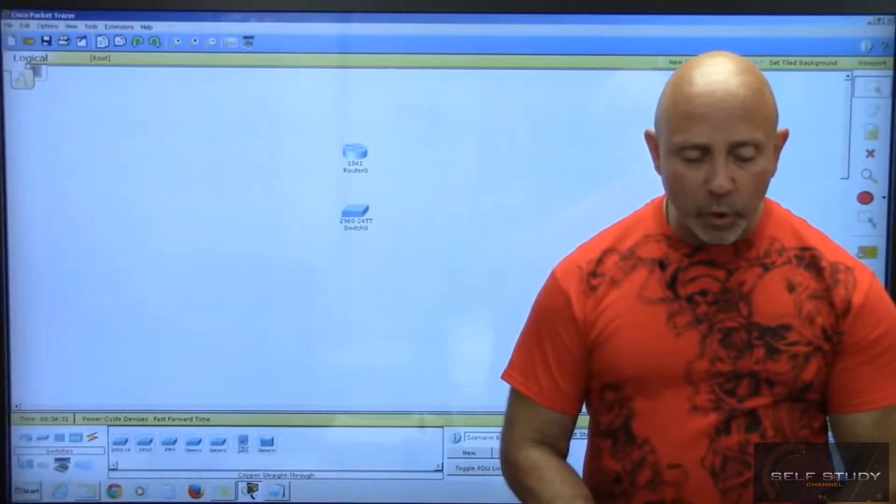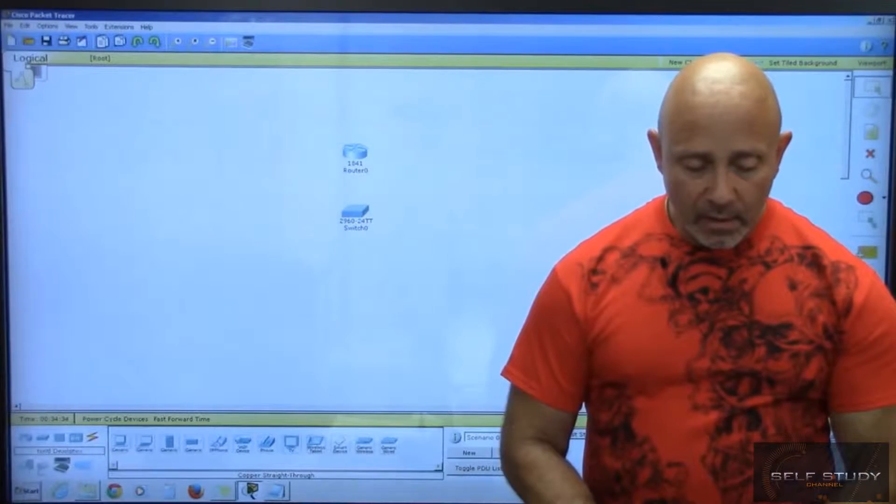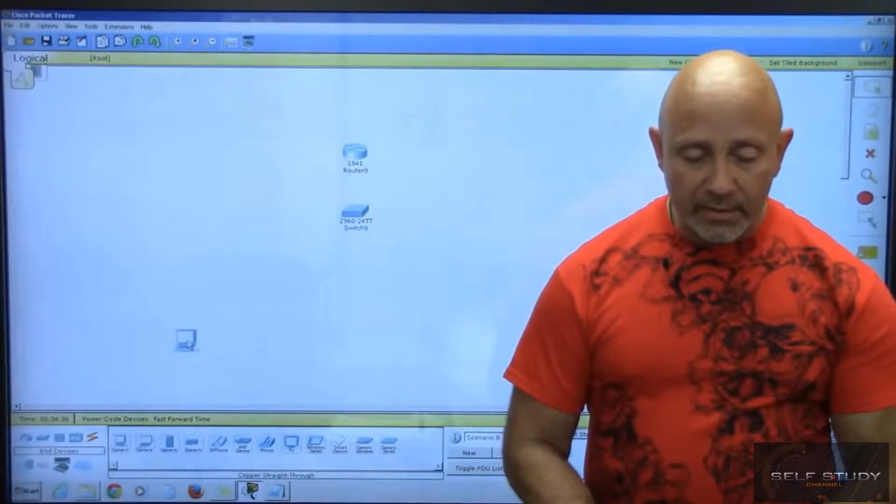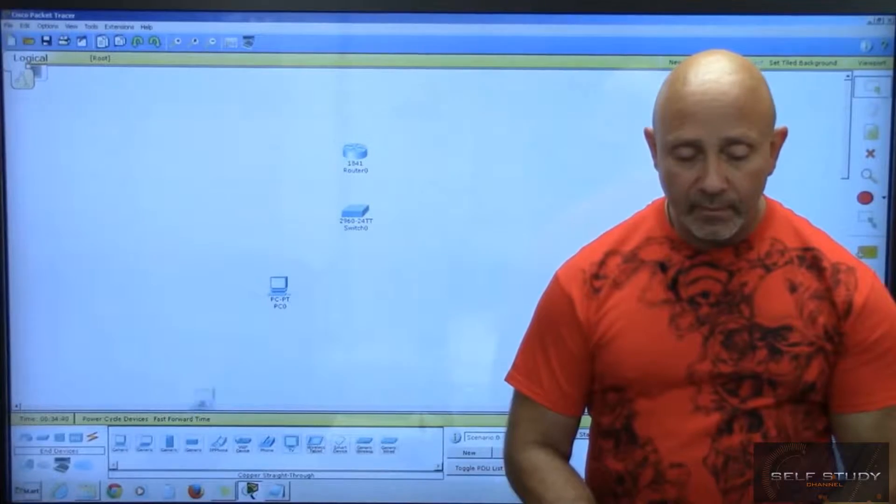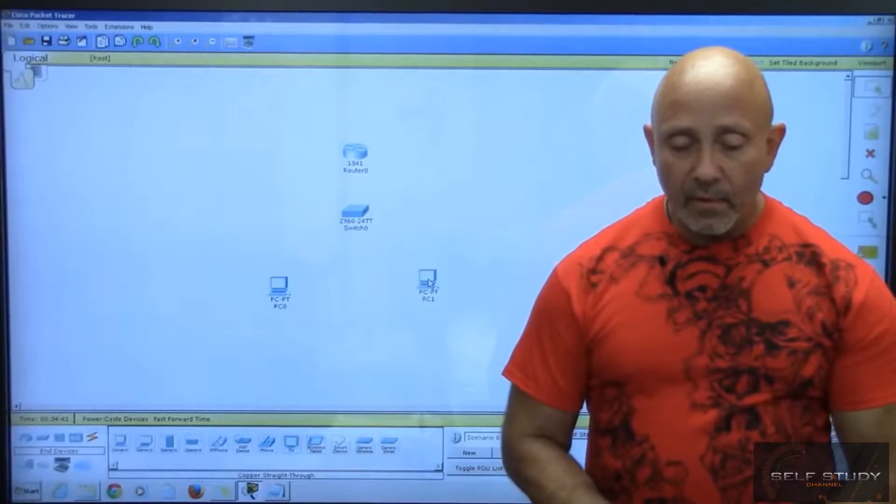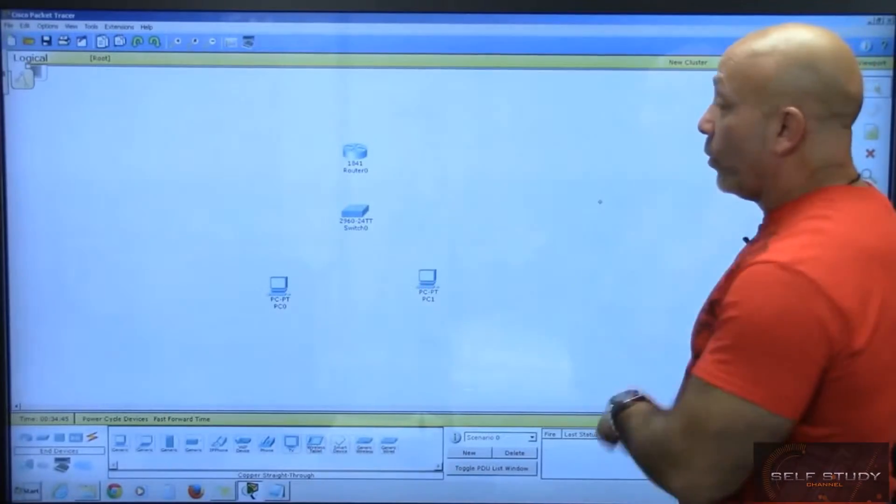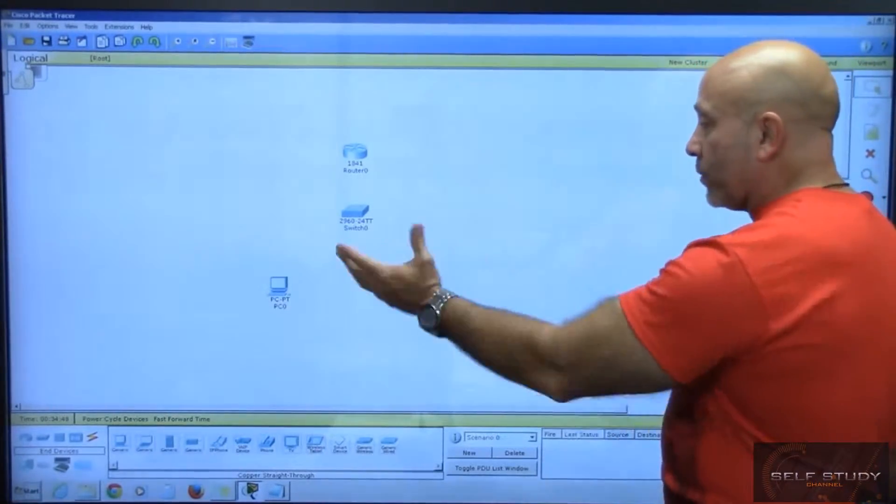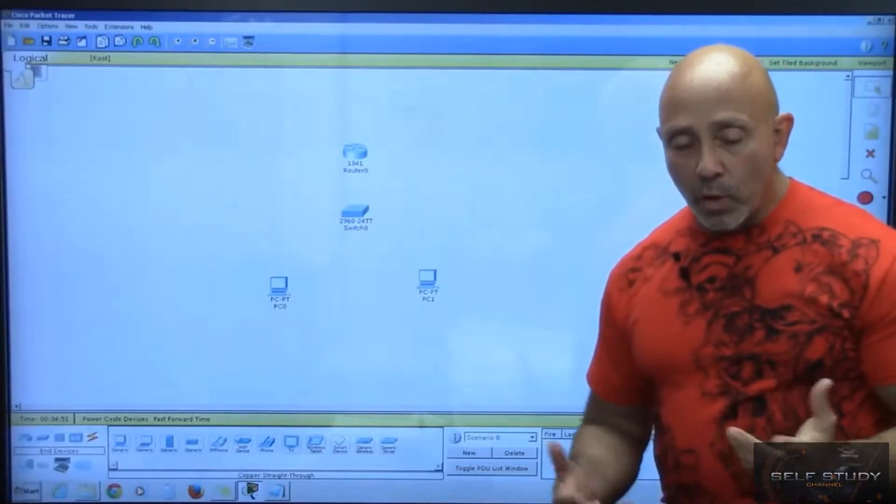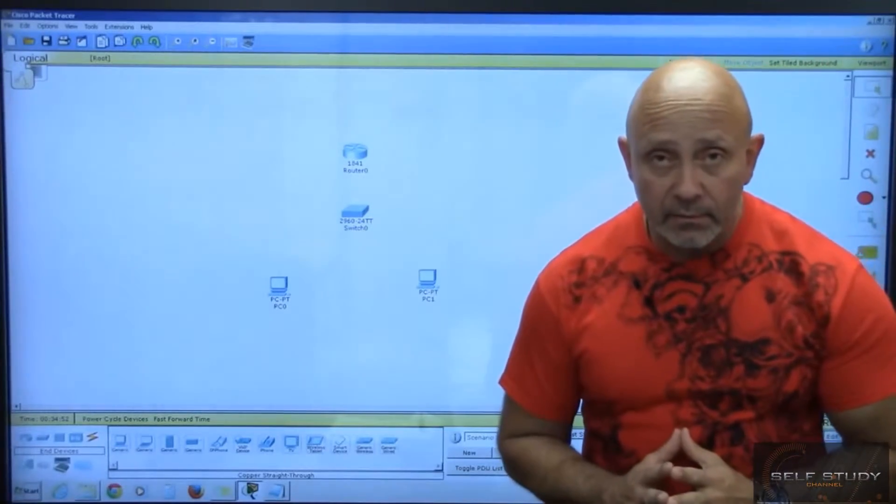Then we're going to pick a PC. We'll pick two PCs and select two PCs right here. So we got a router, which is a layer three device, a switch layer two device, and we have two PCs. So what are we going to do? We're going to connect them.